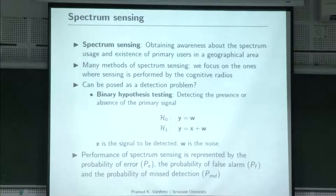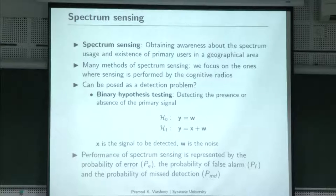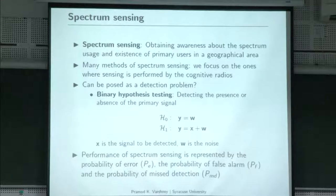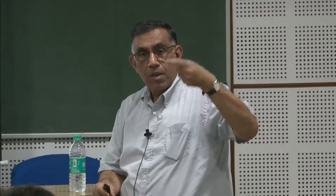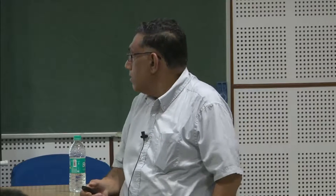More advanced problems — as I was talking about — would not just be 'is it there or not,' but 'who is there' and 'what kind of signal is there.' Those become classification problems or M-ary hypothesis testing problems, where the possibilities might be QPSK states 0, 1, 2, or 3 — those kinds of things.